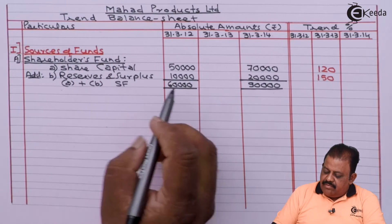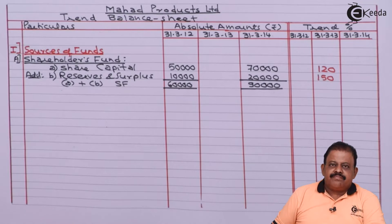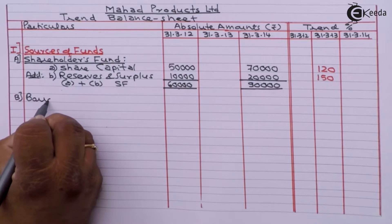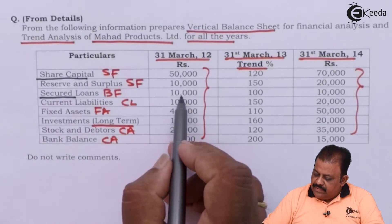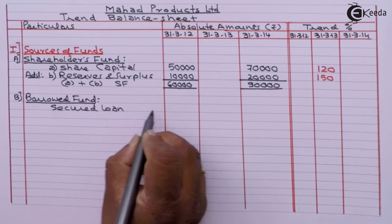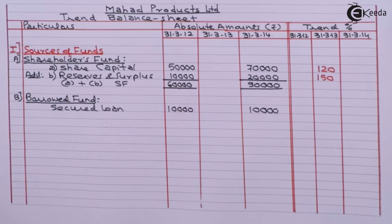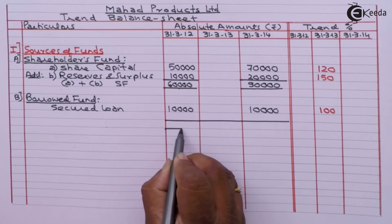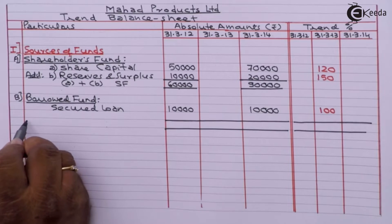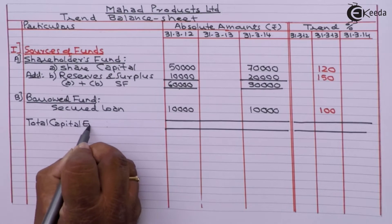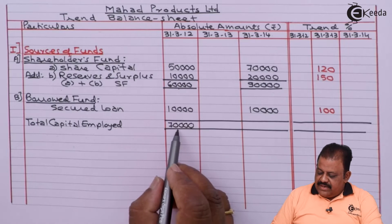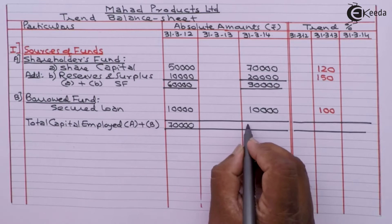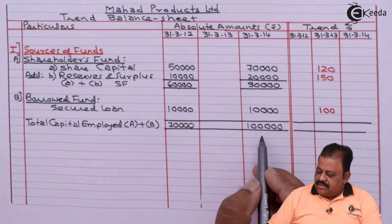Shareholders' fund total is A plus B: 60,000 and 90,000. Borrowed fund - secured loan is 10,000. Total capital employed: 60 plus 10 gives 70,000 for 2012, and 90 plus 10 gives 1,00,000 for 2014.